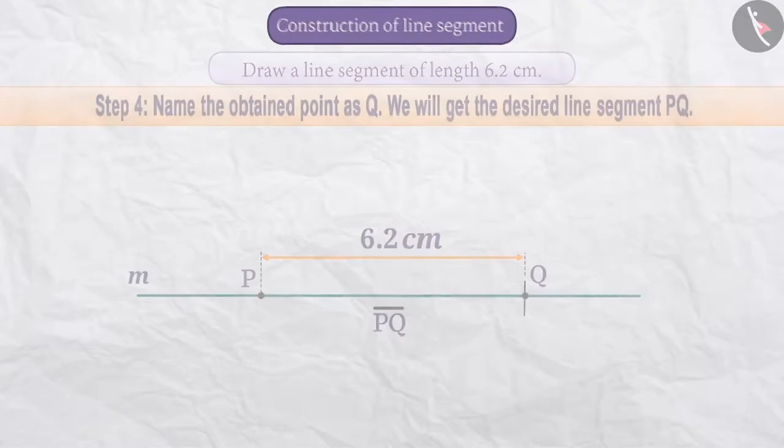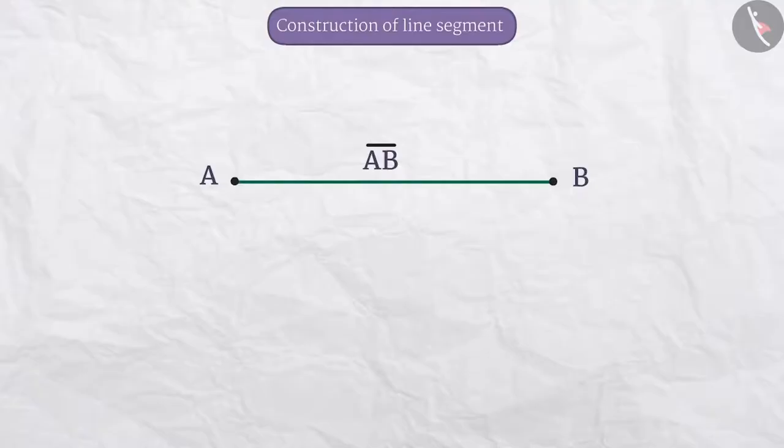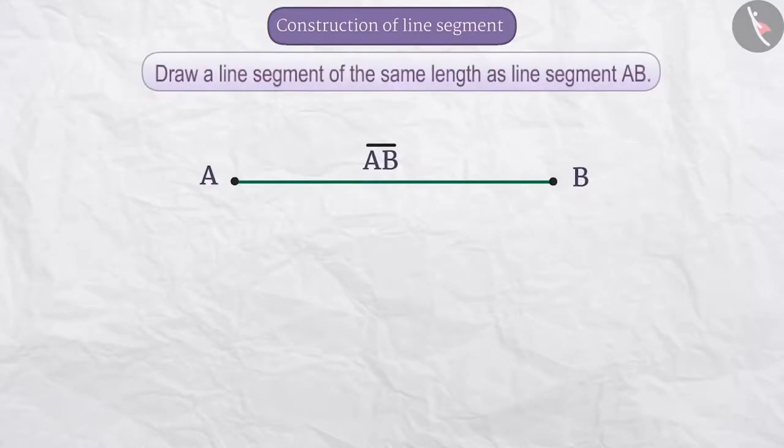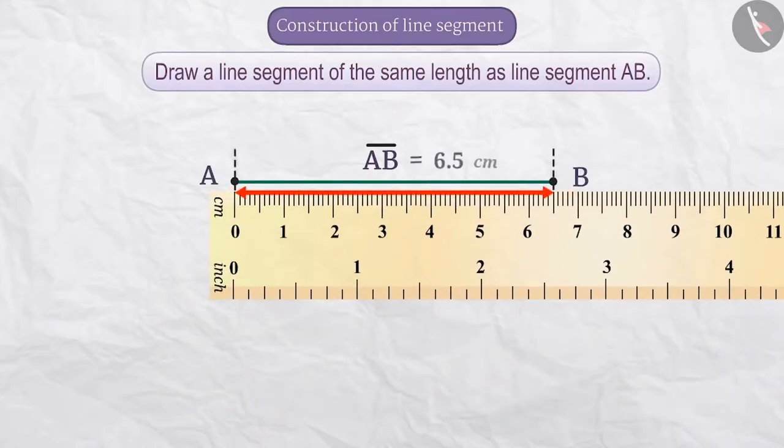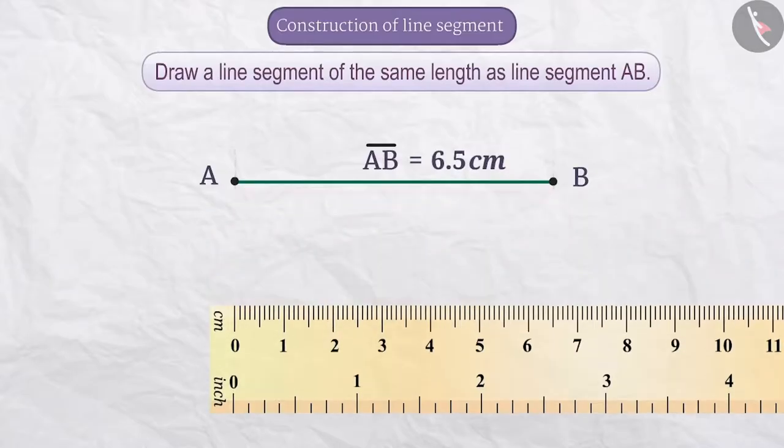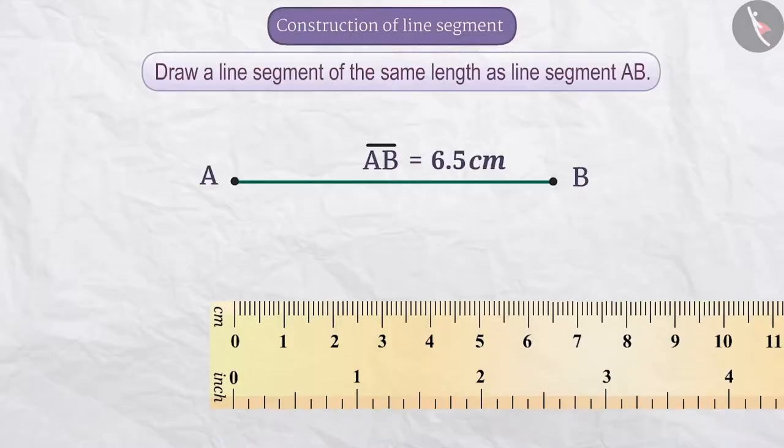Sometimes we need to draw a line segment of equal length. So, let's see how we can draw a line of equal length using a given line segment. To draw a line segment with the help of a ruler, we can find the measurement of the given line segment and then using the method given above, we can draw a line segment of equal length.